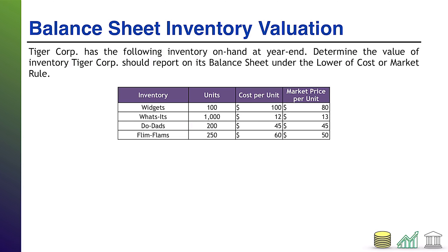Welcome back. The lower of cost or market rule says you must value your goods at whichever is cheaper — market rate or original cost. Normally cost starts lower than market rate, otherwise you'd never sell at a profit. The problem arises when market rate drops below cost — then your inventory is impaired, it has lost value, and you need to write it down.